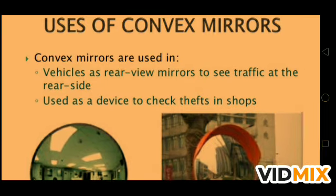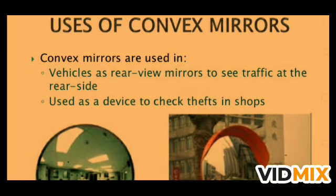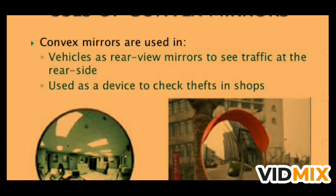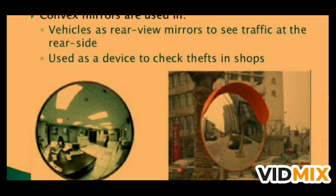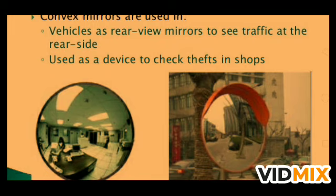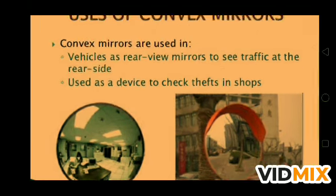The use of convex mirrors: convex mirrors are used in vehicles as rear-view mirrors. Looking at the side mirror of a vehicle, we see the rear-view mirror — used to see traffic at the rear side. Convex mirrors are also used as security devices in shops to check for theft. When there is no camera, shopkeepers put convex mirrors in the shop.